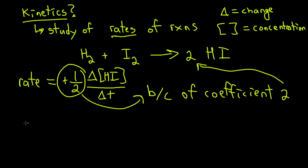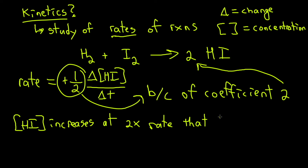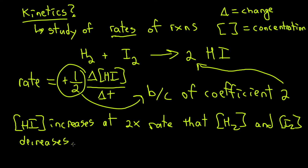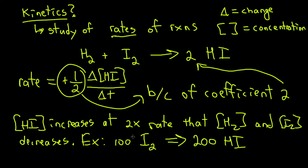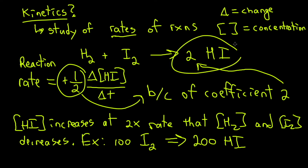This comes out as positive because we are increasing the concentration of HI. What this represents is that the concentration of HI increases at twice the rate that the concentrations of H₂ and I₂ decrease. For example, if I have 100 molecules of I₂, I will produce 200 molecules of HI. This is why, when measuring the overall reaction rate, you divide the rate of formation by two.